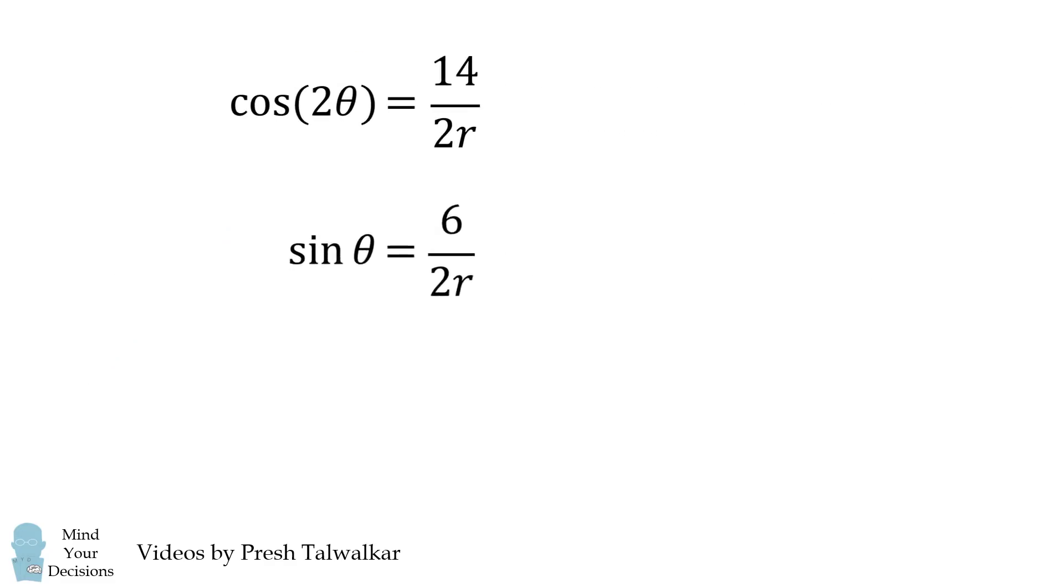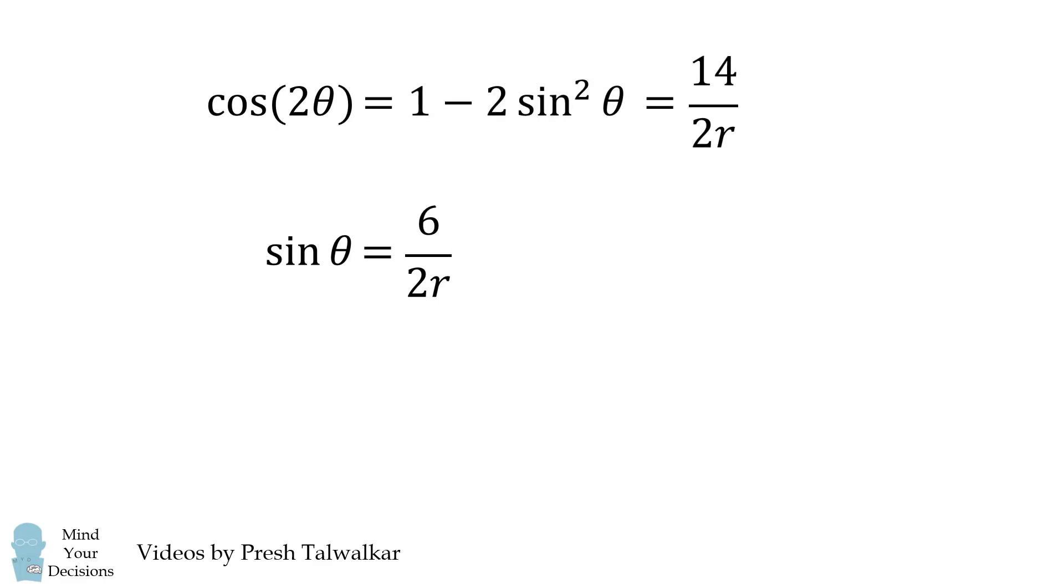We can now focus on these two equations. Cosine of 2 theta will be equal to 1 minus 2 times the sine squared of theta, and we can get sine squared of theta from the second equation. We also multiply this second equation by 2, and then we can substitute into the first equation.